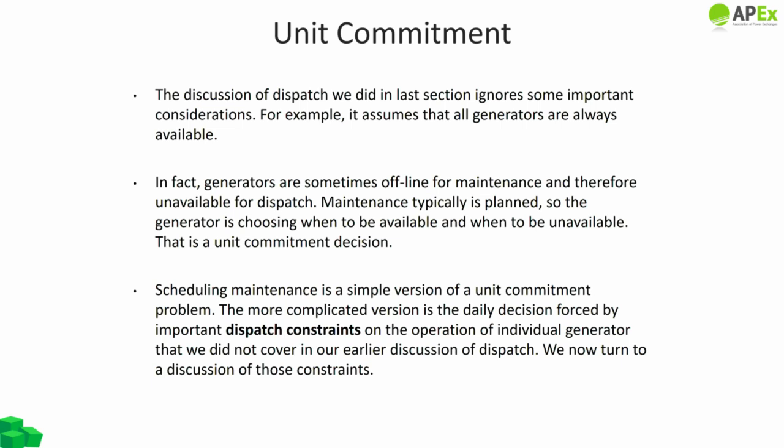Let's discuss the second part of our session: unit commitment. The dispatch discussion in part one ignores some important considerations — for example, it assumes all generators are always available, whereas in fact generators are sometimes offline for maintenance. Most maintenance is planned, so generators choose when to be available or unavailable — that is a unit commitment decision. The obvious choice is to schedule maintenance when load is low and the capacity is not urgently needed. The more complicated version involves daily decisions forced by dispatch constraints on individual generators that we ignored earlier.